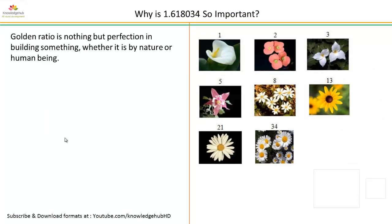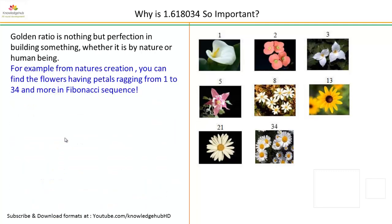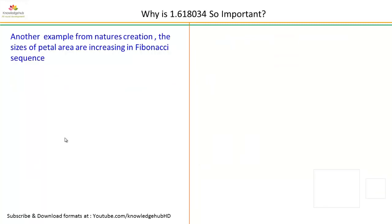Golden ratio is nothing but perfection in building something, whether it is by nature or human being. For example, from nature's creation you can find flowers having petals ranging from 1 to 34. This is 2, 3, 5, 8, 13, 21, 34. This number is followed by nature.